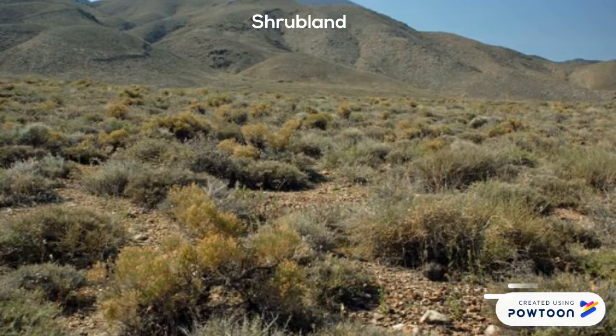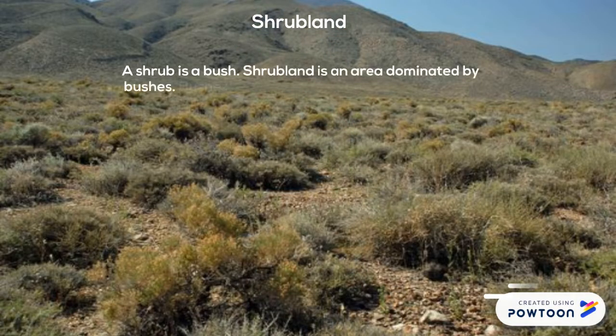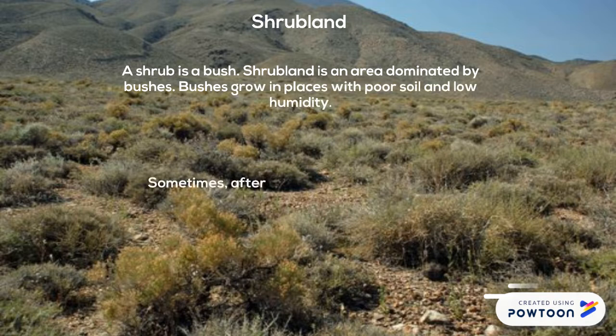Shrubland: a shrub is a bush. Shrubland is an area dominated by bushes. Bushes grow in places with poor soil and low humidity. Sometimes, after a very long period of time, shrubland can grow into a forest.